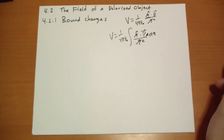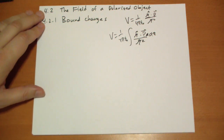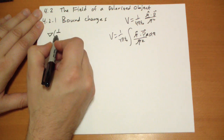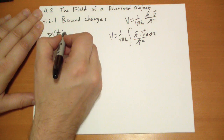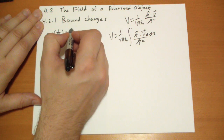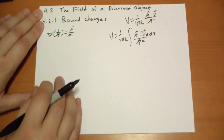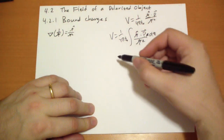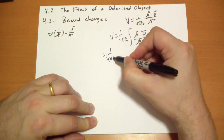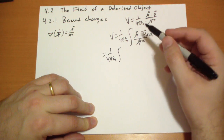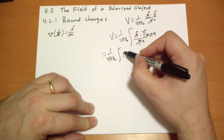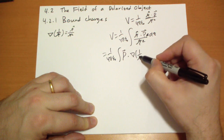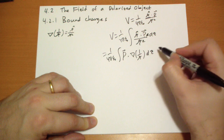And then Griffiths pulls a really cool trick. Remember back in chapter 1, you did an exercise: what is the gradient of 1 over r? And the answer is r̂ over r squared. Well, we have r̂ over r squared right here. So we substitute that in, and we get 1 over 4π ε₀, the integral of P-vector dot the gradient of 1 over r, d tau.